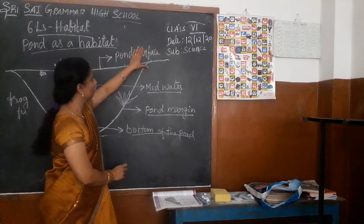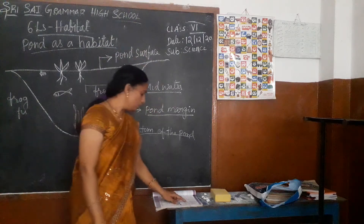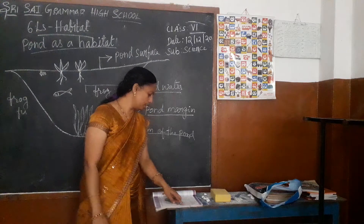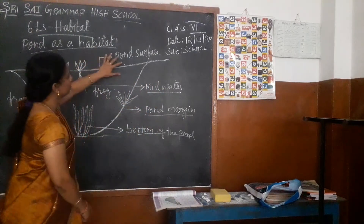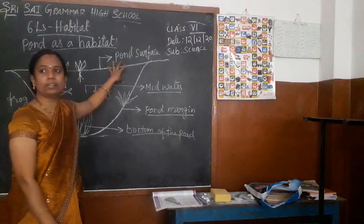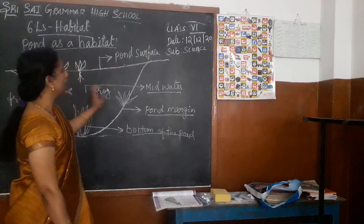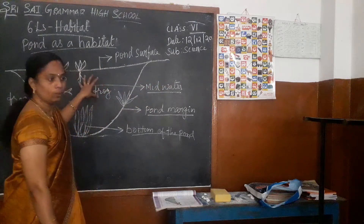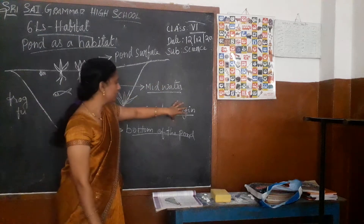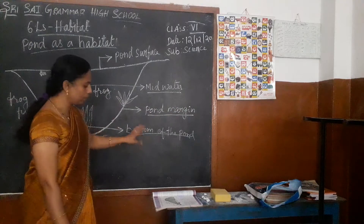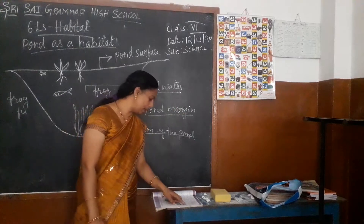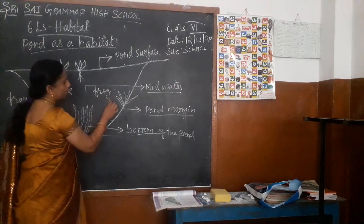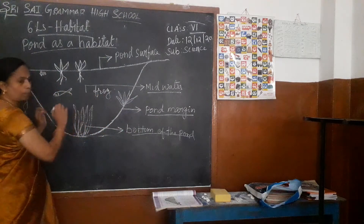We can discuss them one by one. Which animals and plants do you think live on the surface of the pond? What type of animals are living on the surface? And also what type of animals are living in the middle of the water, the margins of the pond, and the bottom of the pond? In the mid water, what type of animals and plants are living inside the pond?